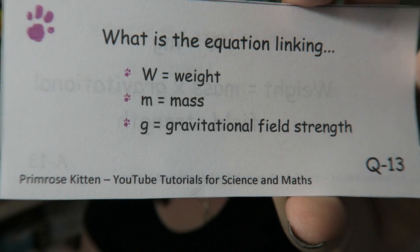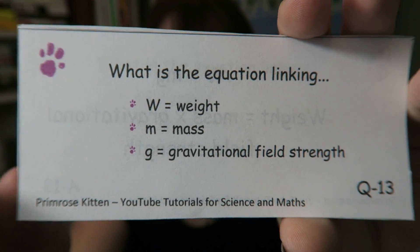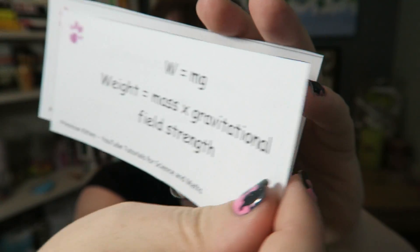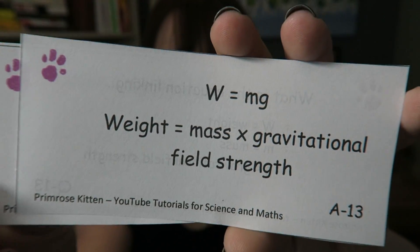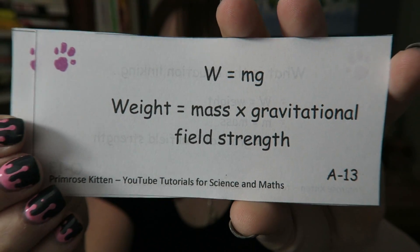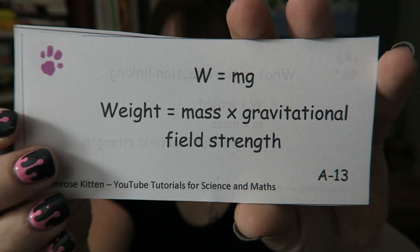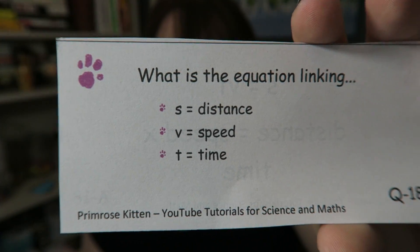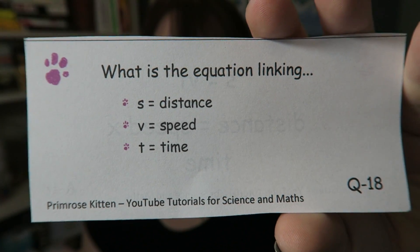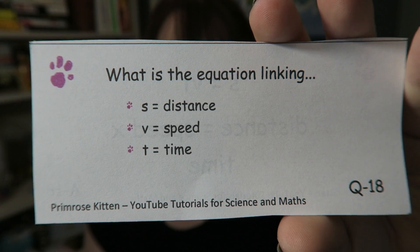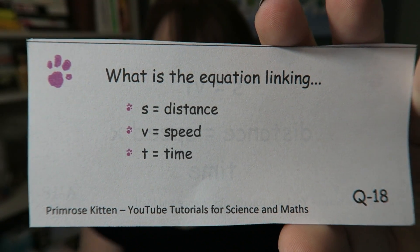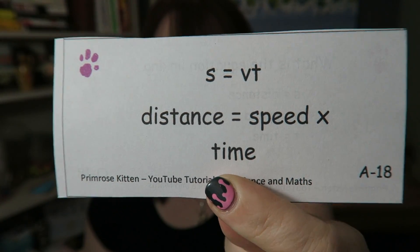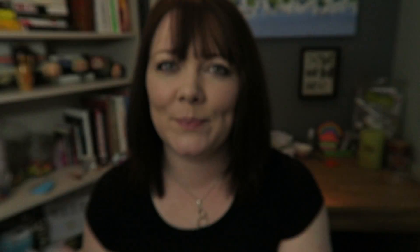What is the equation linking weight, mass, and gravitational field strength? Weight is mass times the gravitational field strength. And then last one — what is the equation linking speed, distance, and time? Distance is speed times time.